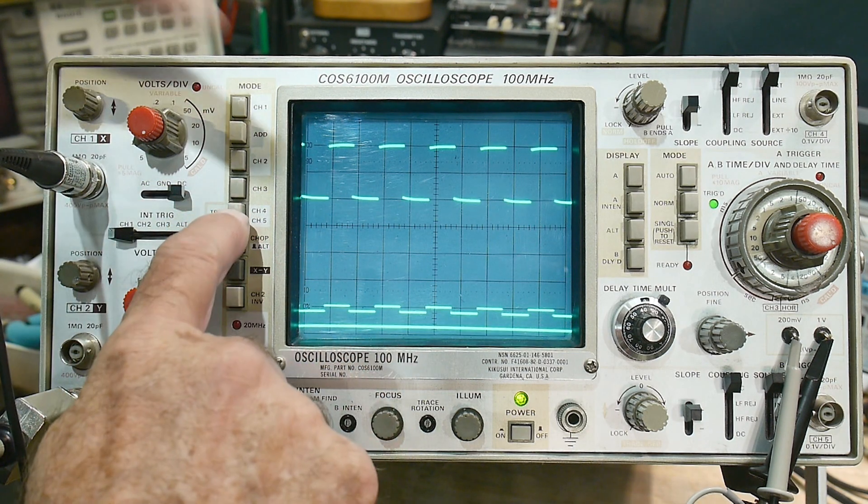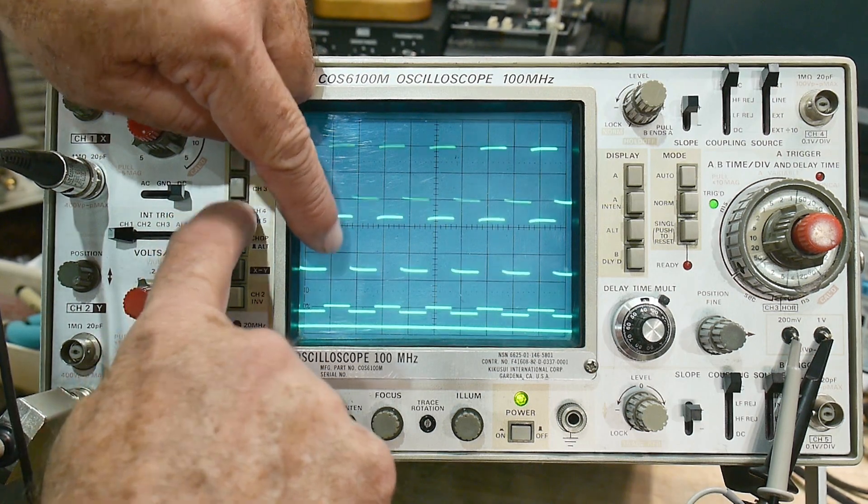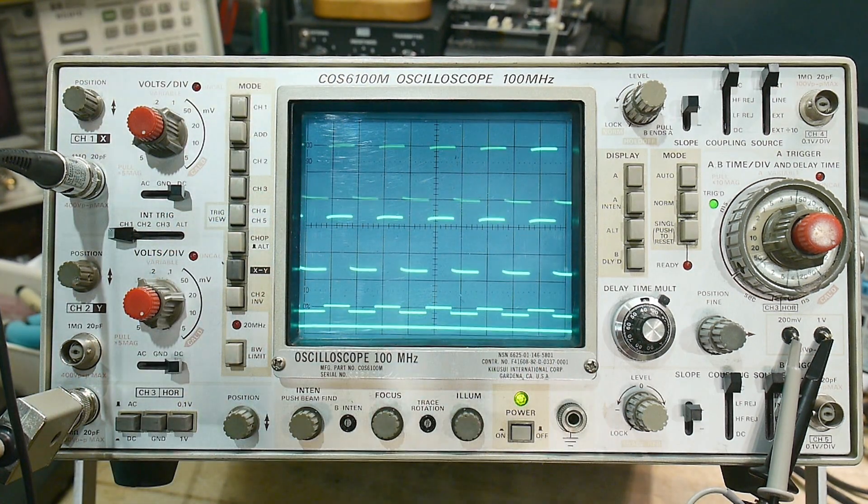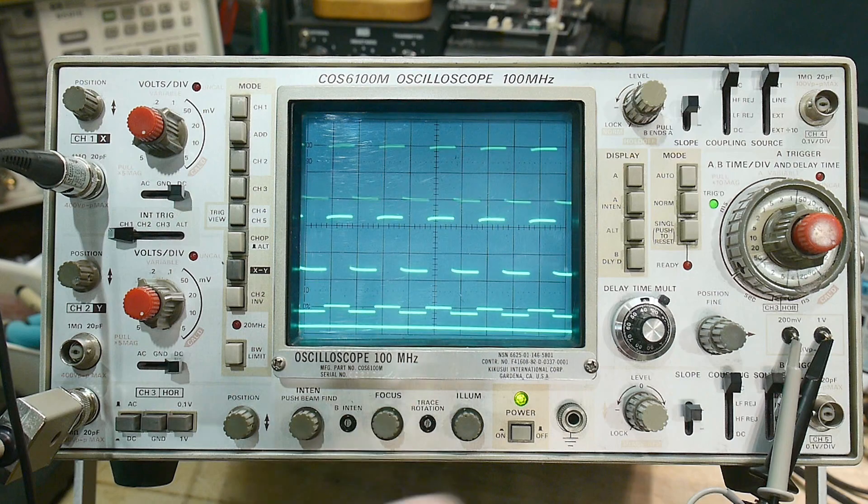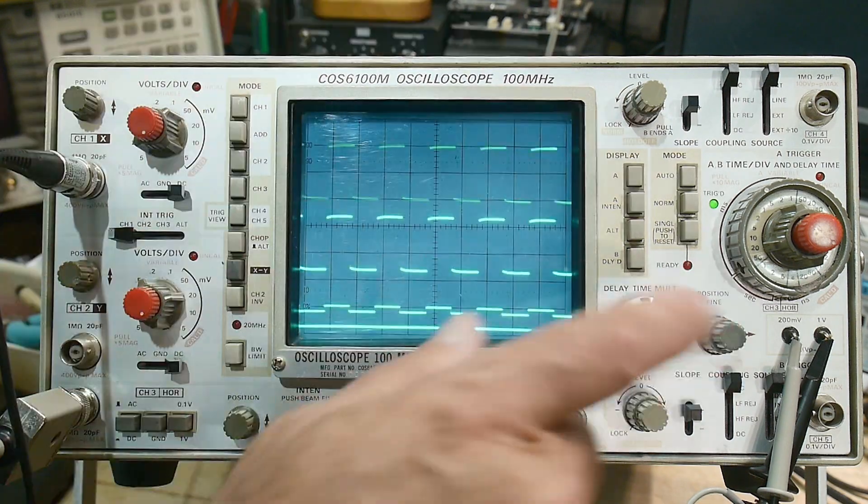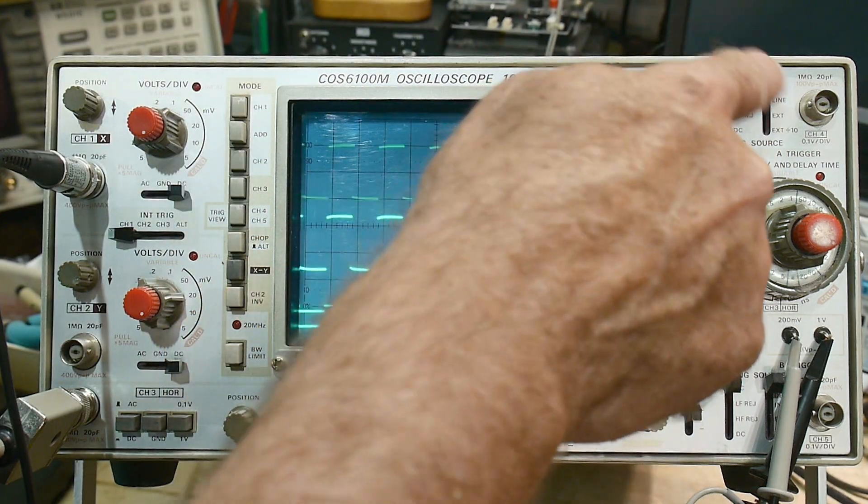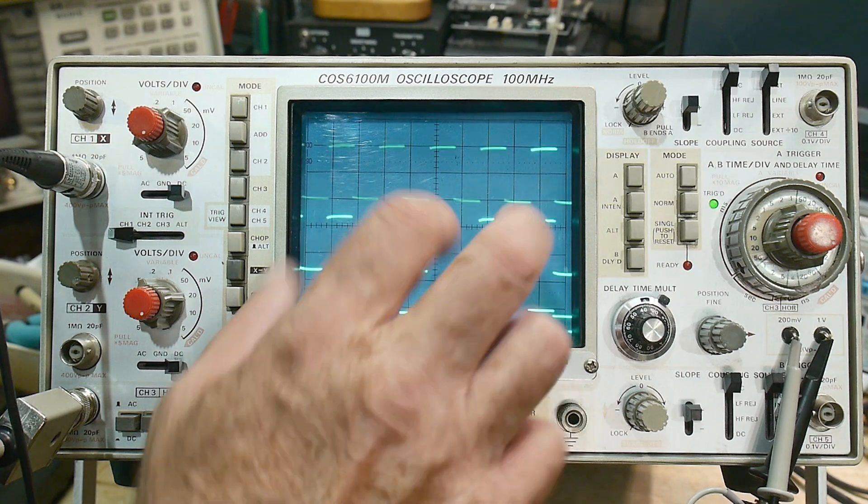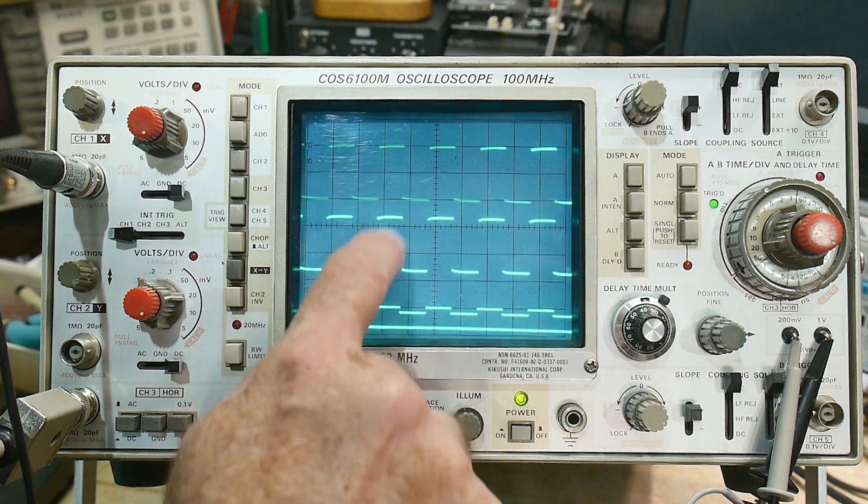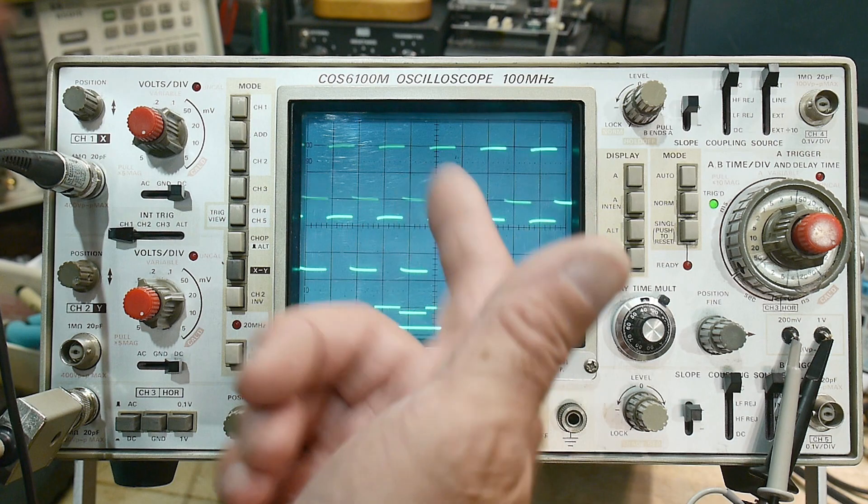So this which just popped up here, this is trigger view. What it says is whatever is being sent to the trigger circuit, show it. So when I have it set to internal, it's going to show the same thing as up here, it's going to be a mirror image of it, because that's what's being sent.